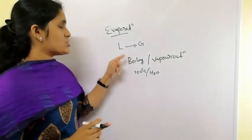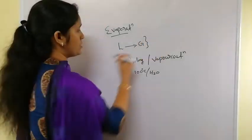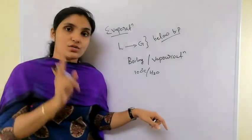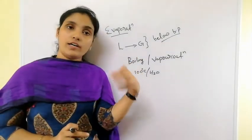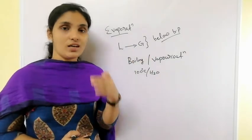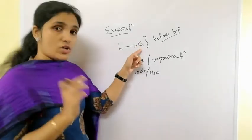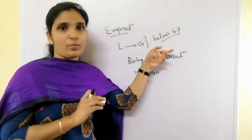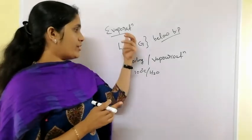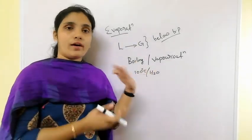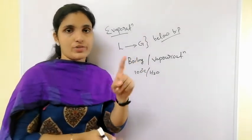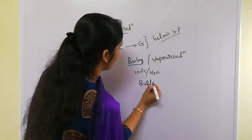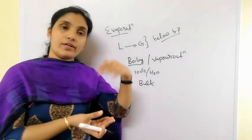Coming to evaporation, it is also the conversion from liquid to gas, but the speciality is that it occurs below the boiling point. So note: boiling means conversion from liquid to gas at its boiling point, but evaporation is the same phase conversion — liquid to gas — but below its boiling point. That is the first major difference.